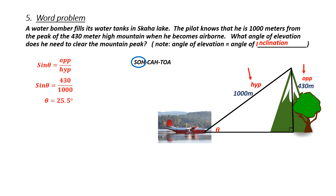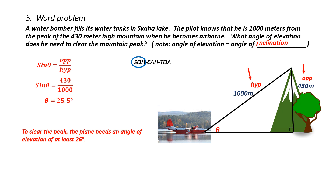This is a bit of a trick question because the plane needs to clear the mountain, not just hit the peak. So we need more than 25.5 degrees. Since they didn't specify, I'll write a word answer: to clear the peak, the plane needs an angle of elevation of at least 26 degrees. Don't forget — word problems need word answers.